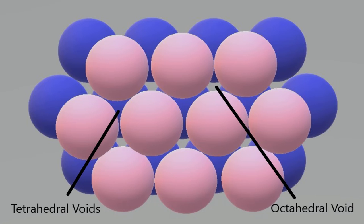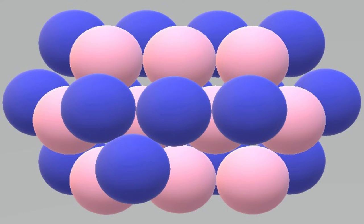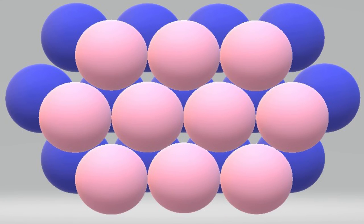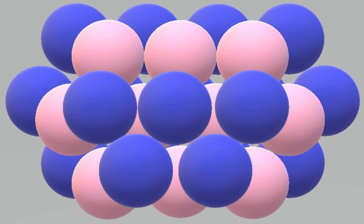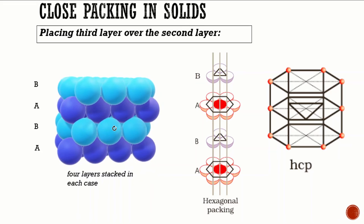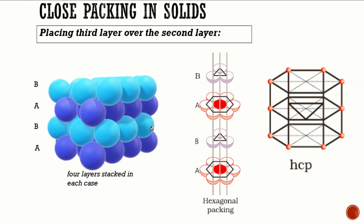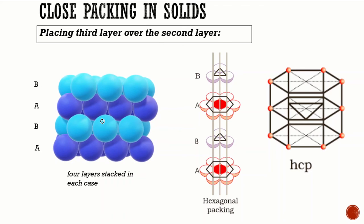When the third layer is placed over the second, there are two possibilities. In the first, the tetrahedral voids of the second layer are covered by spheres of the third layer. In this case, the spheres of the third layer are exactly aligned with those of the first layer, creating an ABAB pattern. This structure is called hexagonal close packing or HCP. This arrangement is found in many metals like magnesium, molybdenum, beryllium, and zinc.